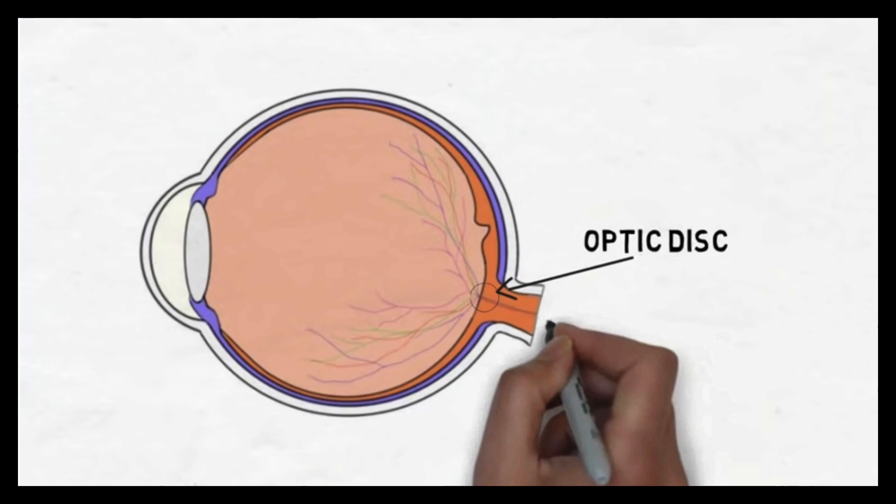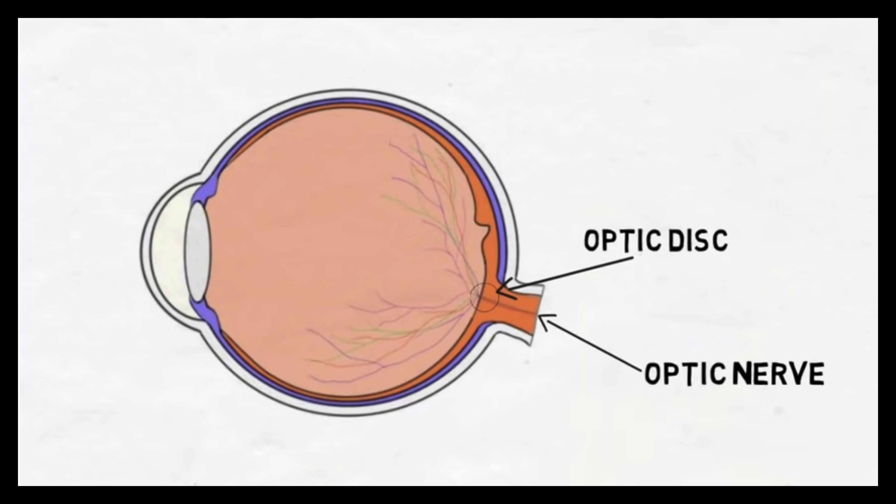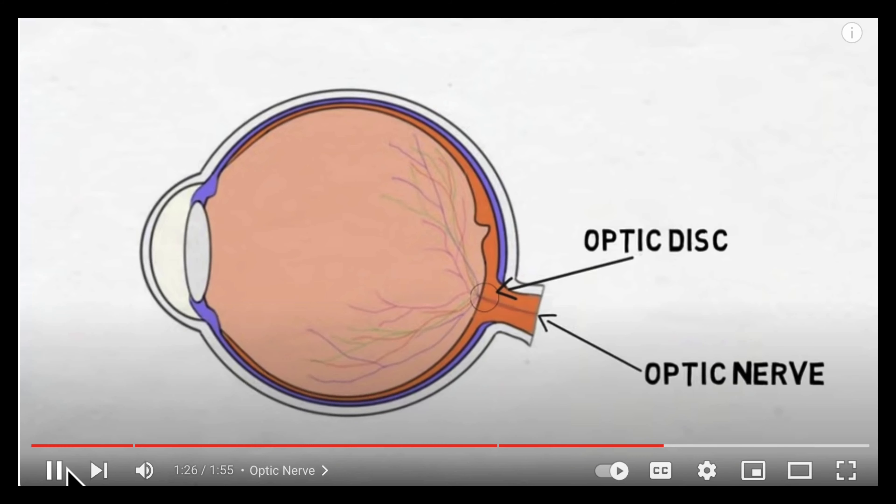After leaving the retina, the ganglion cell fibers are called the optic nerve. The optic nerve carries visual information toward the brain to be processed.